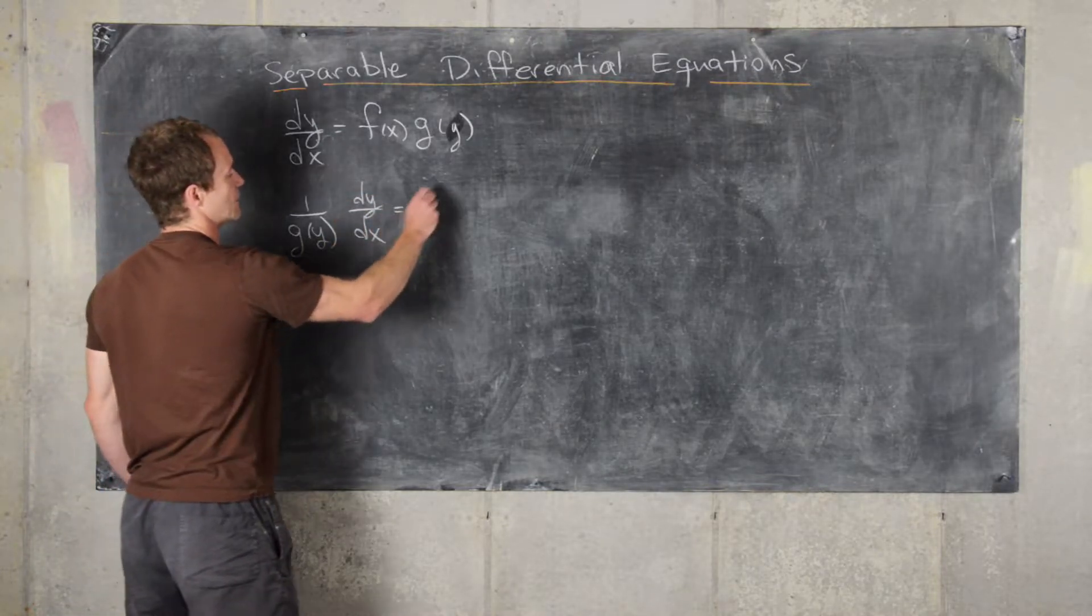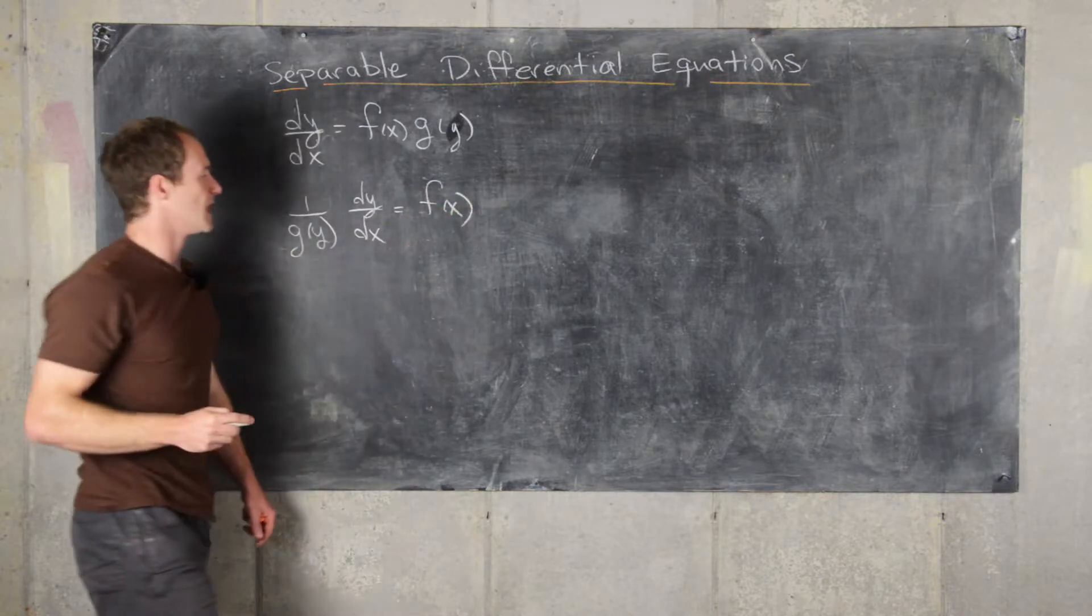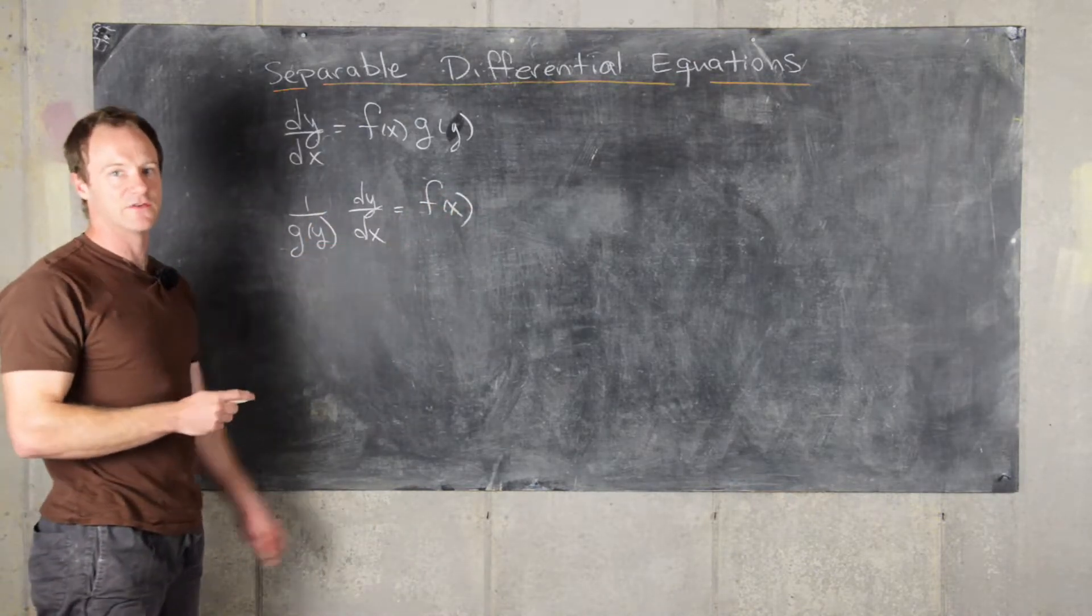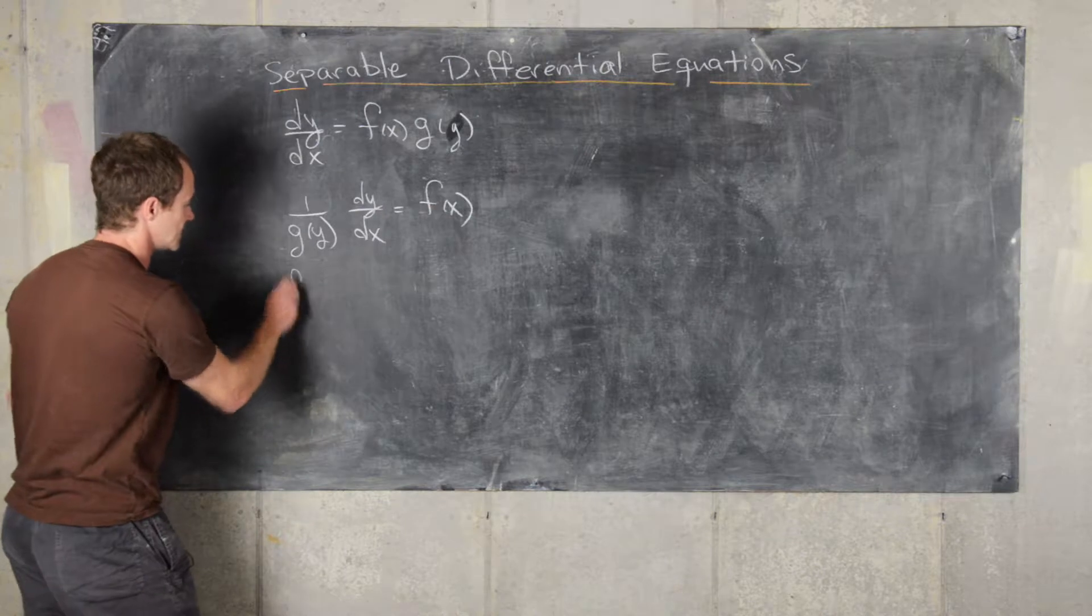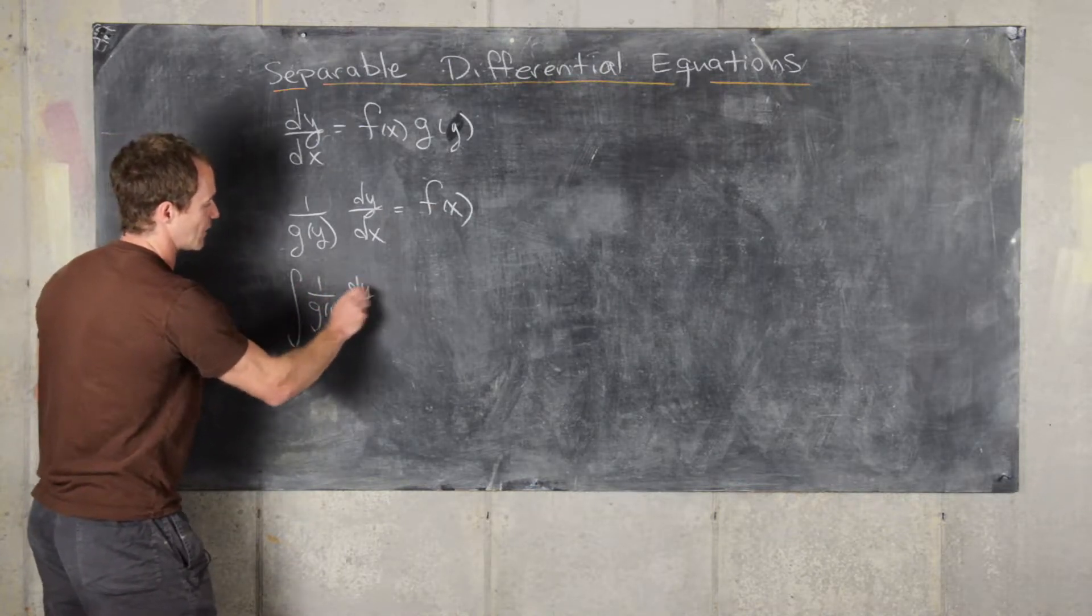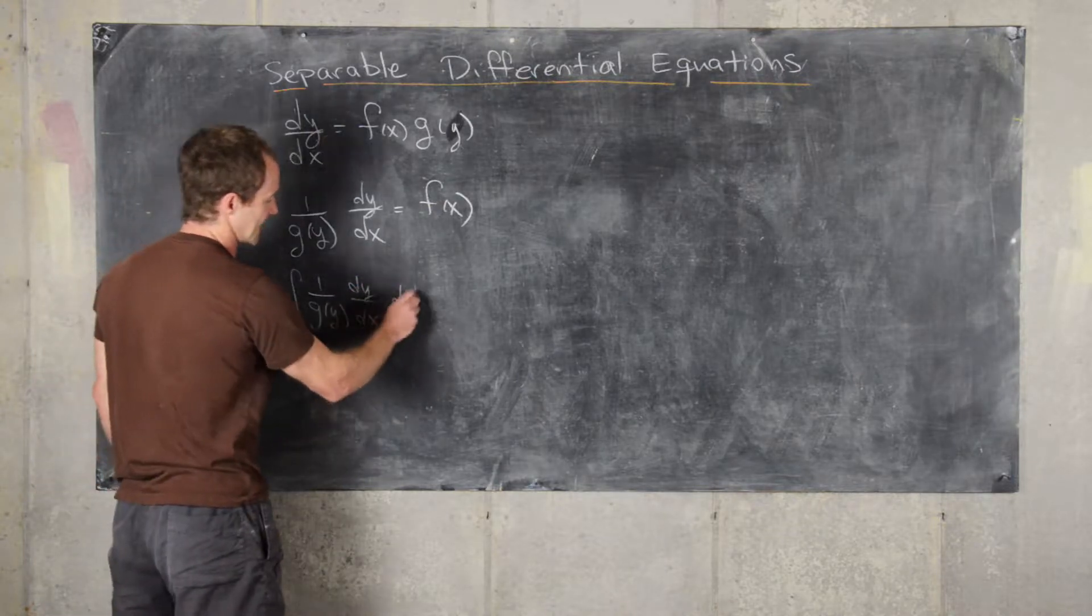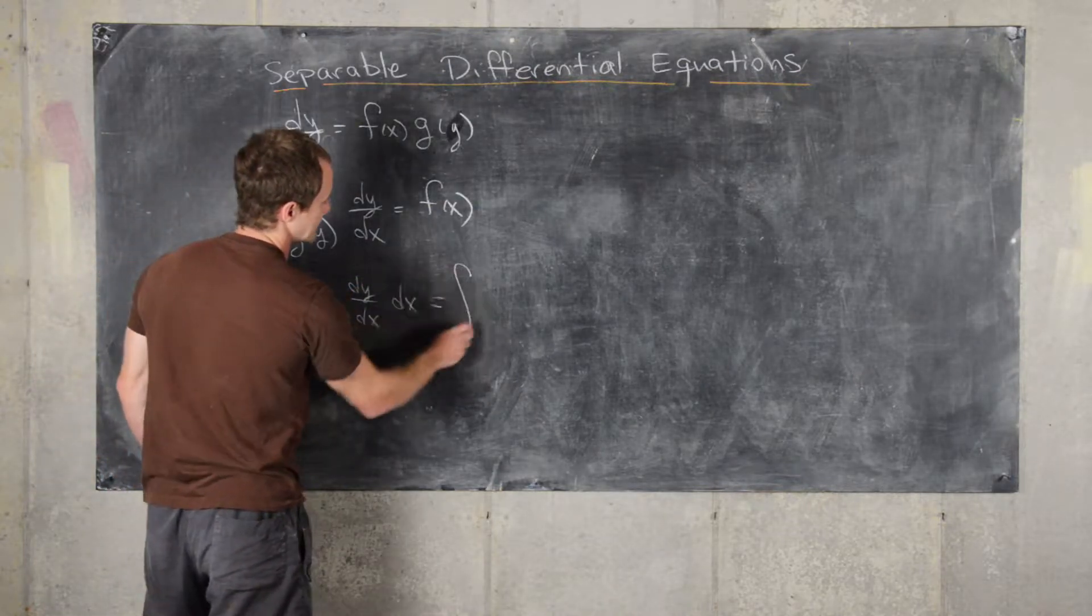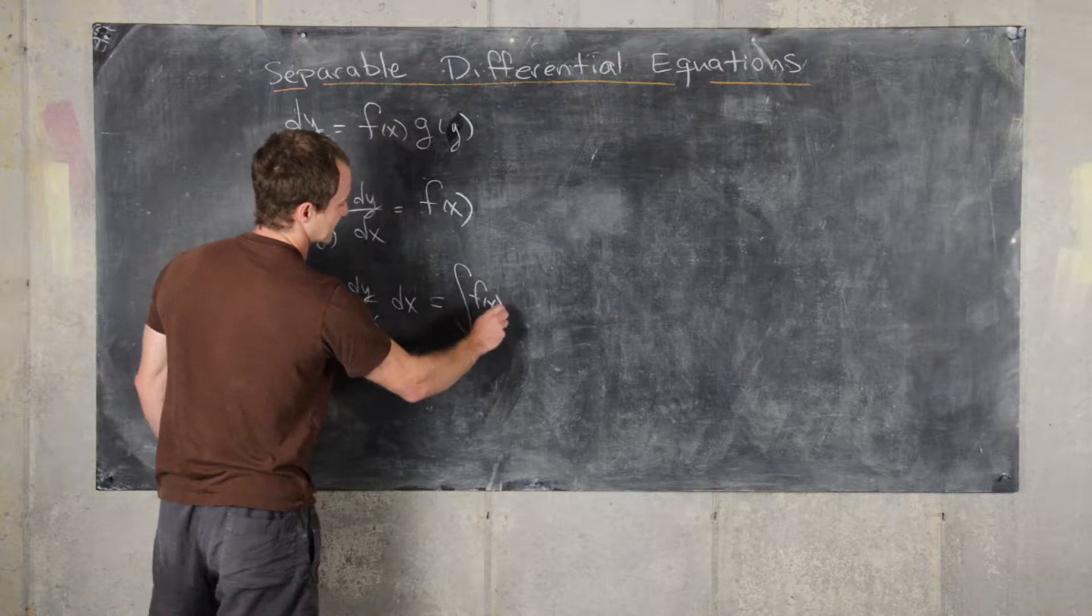Times dy/dx equals f(x). From here, we'll take the antiderivative of both sides with respect to x. That'll give us the antiderivative of 1/g(y) times dy/dx dx equals the antiderivative of f(x) dx.